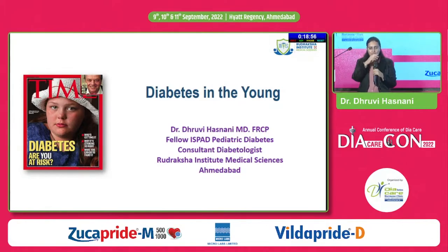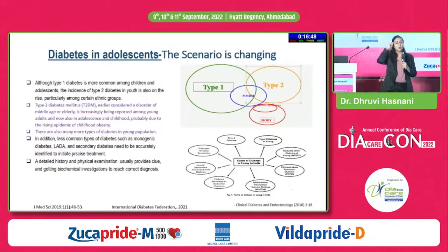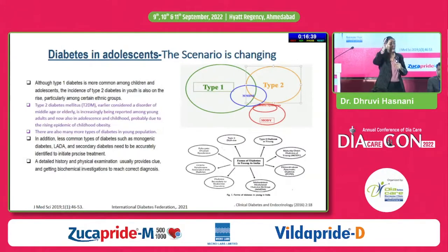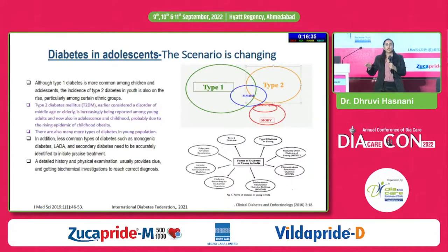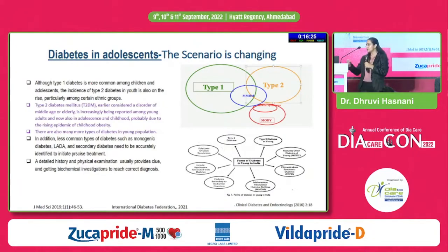Whenever I start a presentation, we think: what do you mean by a young population? Even at 38 years, you have to think about malnutrition-modulated diabetes, type 2 diabetes, thyroid disorder-related hyperglycemia, FCPD in our country, MODY, and also latent autoimmune diabetes of the adult. All of these forms of diabetes that are in the spectrum are what we have to think and talk about.